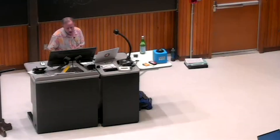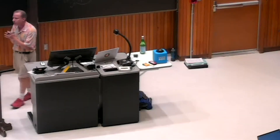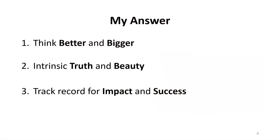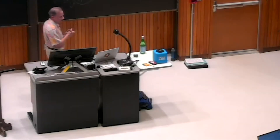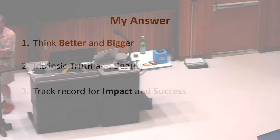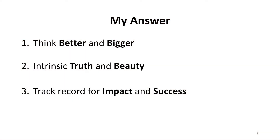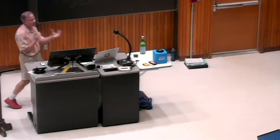The third answer is a correlation answer. There seems to be a really strong track record of people who've done work in theory having great impact and great success in computing. This is not necessarily causality — it's hard to know whether it's just a coincidence — but if you look at many of the most successful computer scientists as well as the most successful companies, they grew out of people working in theory much more than people working in systems, relative to the number of people in each area.